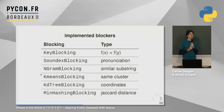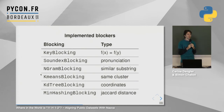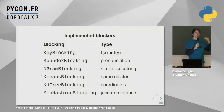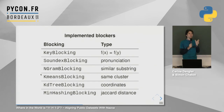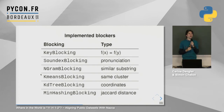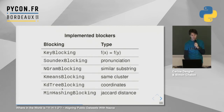In Nazca we have several blocking strategies. Key blocking applies a function to each record, and if the result is the same, the records go in the same block — useful when records share a country or attribute. There is pronunciation blocking for words spelled differently but pronounced the same. There is n-gram blocking for similar substrings. There is geospatial blocking for coordinates, using a k-d tree to find cities within a given area. And for strings, we have min-hash blocking, which creates blocks of strings sharing similar tokens.